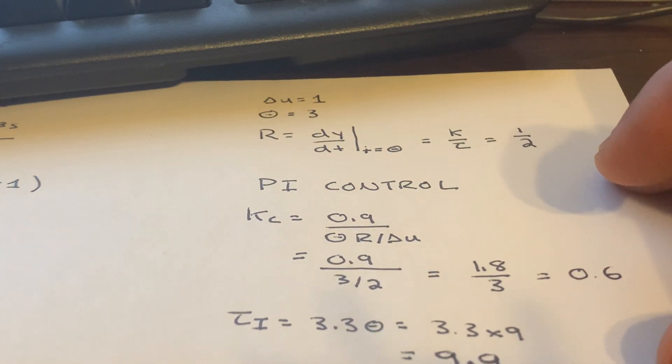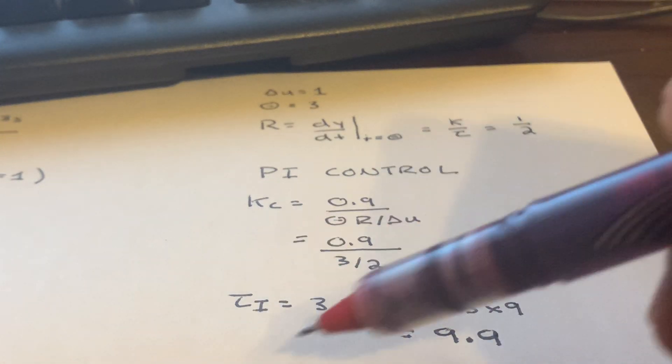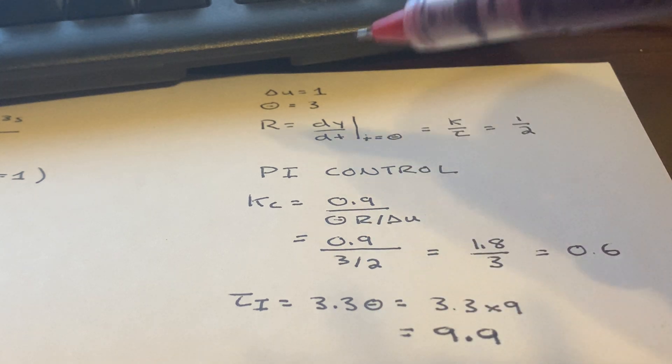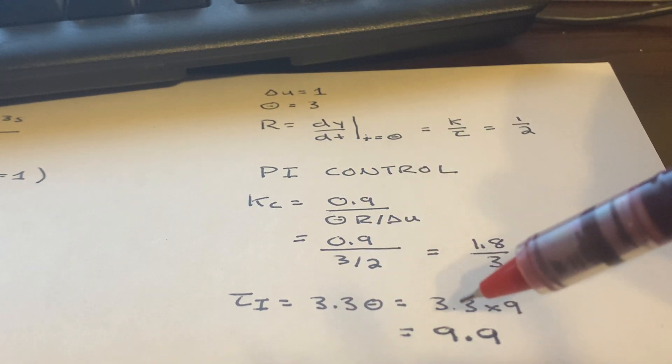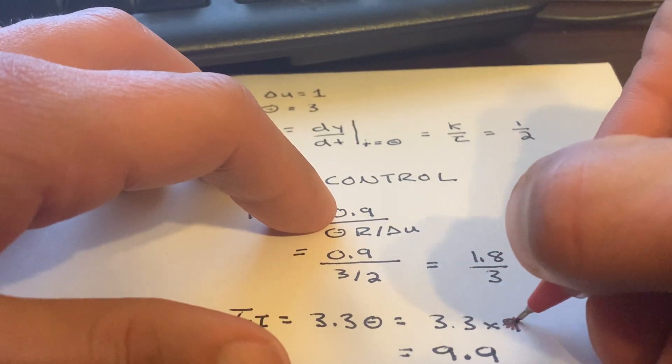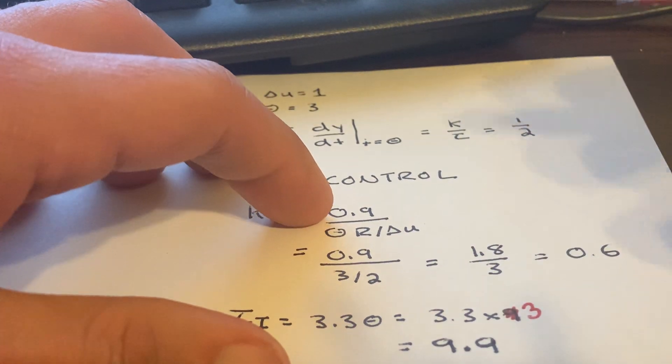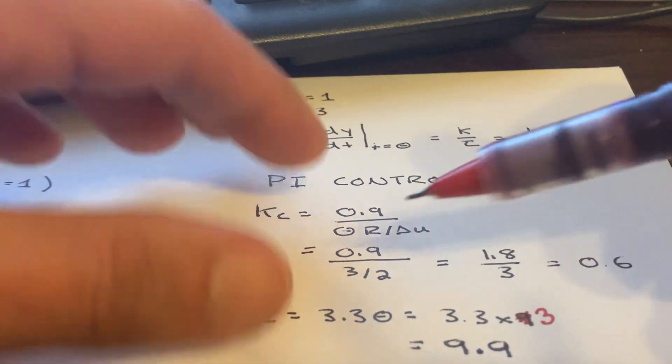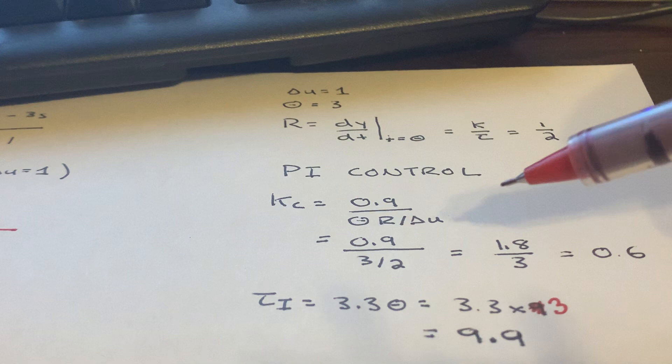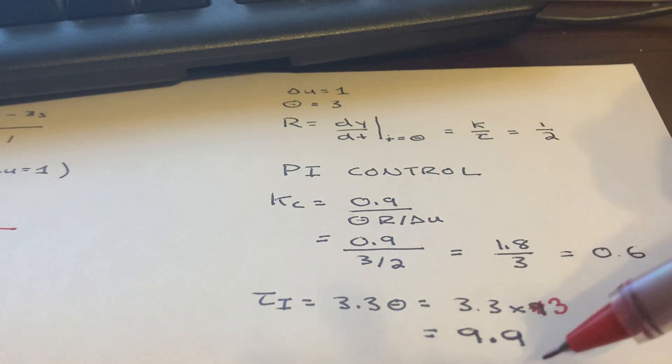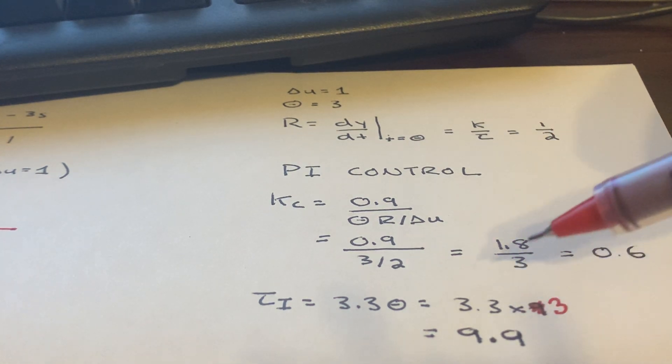Likewise, our integral time is 3.3 times our time delay, which in this case is 3. So that tells us 3.3 times—I made another mistake, got ahead of myself—times our 3, and then that's simply equal to 9.9. And so those would be your PI or open loop Ziegler-Nichols tuning rules for a PI controller.